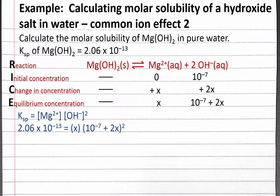To solve this, we'll need to make a simplifying assumption. We can either assume that 10 to the negative 7 is small compared to 2x or that 2x is small compared to 10 to the negative 7. Let's start by assuming that 10 to the negative 7 is small compared to 2x. If this assumption is not valid, we can try the other assumption.